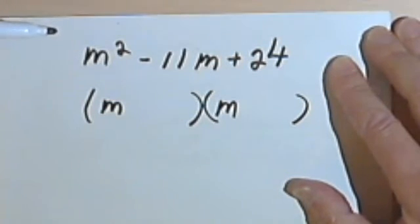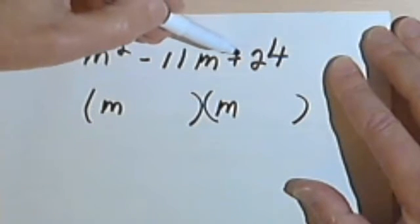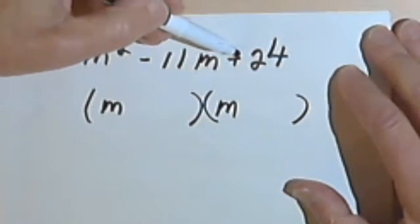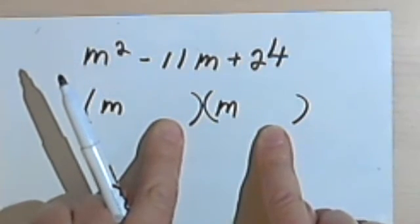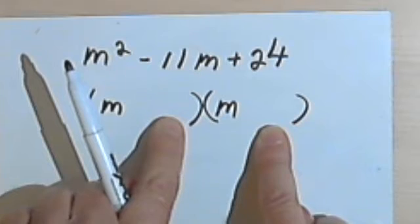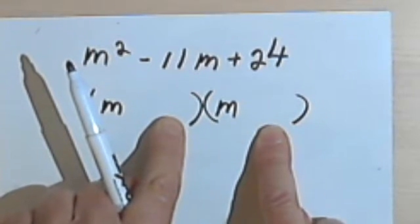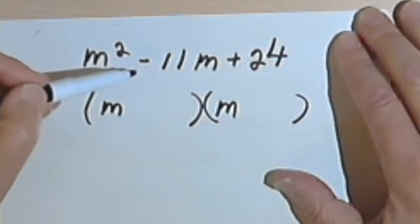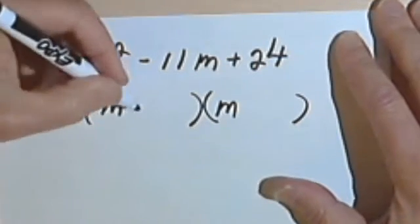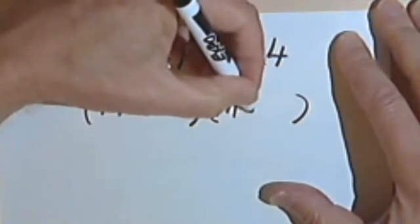Next thing I want to do is look at the signs. I've got a positive sign here, so that means that both of my constants, the number part of the binomials, both of those were the same sign. Now to find out what the sign is, I'm going to look at the middle term, and that's negative. So now I know that both of my signs are negative.